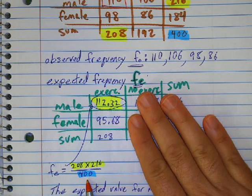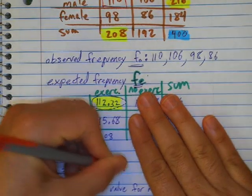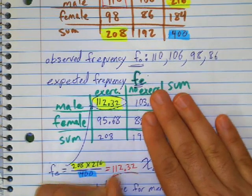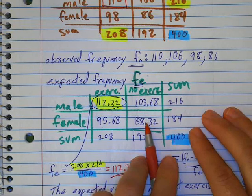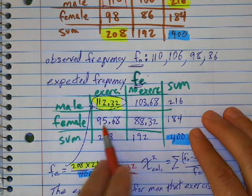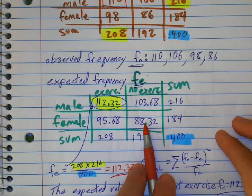Okay, so that's how I found the expected value of 112.32. Okay. Now, I need to do the same thing for all four of these places. And then these are the expected values for each of these four things.